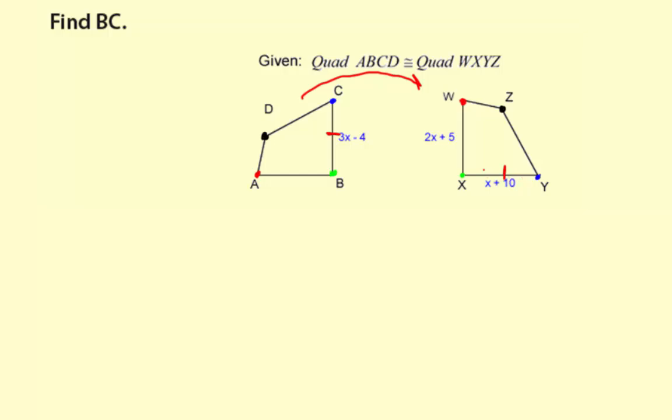So, now that I have that information, I can write the correct equation and then finish out answering the question. So, because this is a congruence, the corresponding parts of the congruent figures are congruent. So, I can say 3X minus 4 equals X plus 10. Those are the measurements of segments BC and XY.